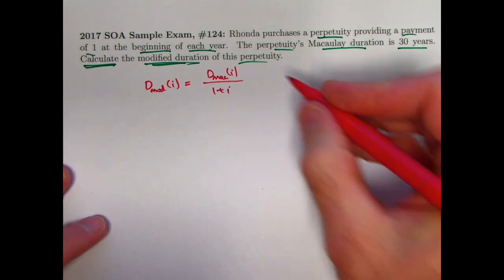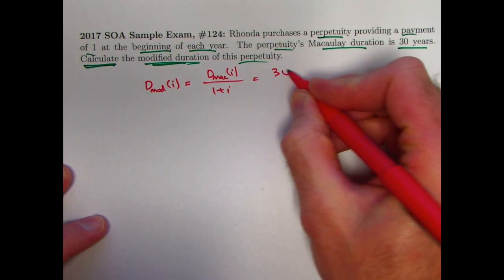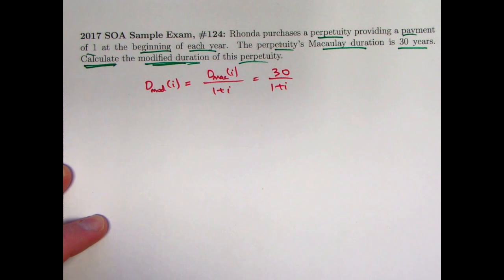And we are given that d mac is 30, so if we can figure out i, then we've solved the problem. So it seems pretty short, but how in the world are we going to figure out i? We're only told that this perpetuity due has a Macaulay duration of 30 years. Can we figure out i from that? The answer is yes.